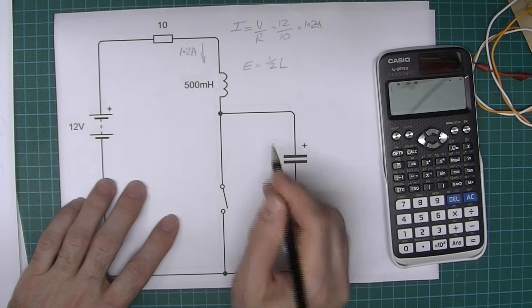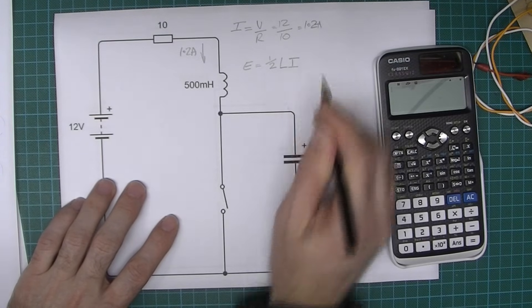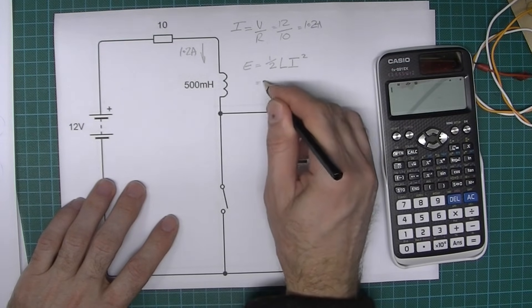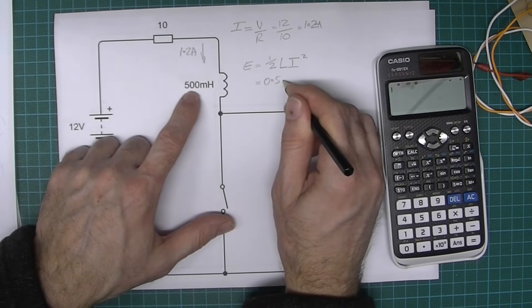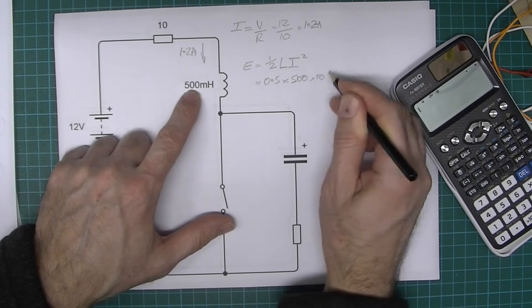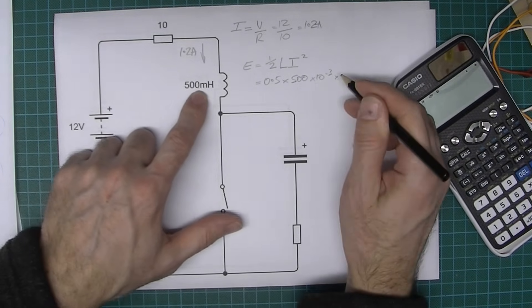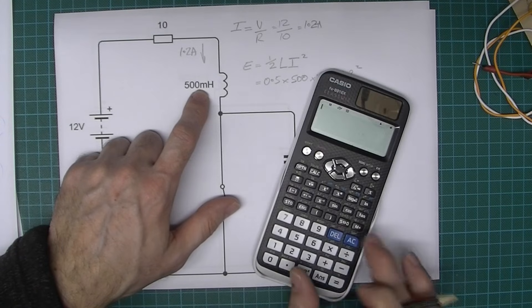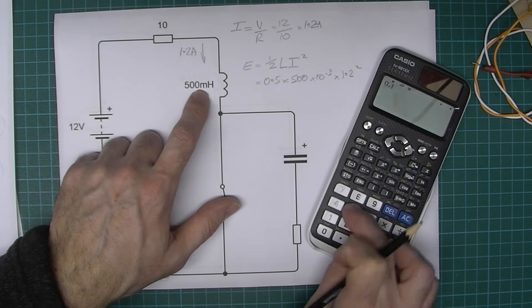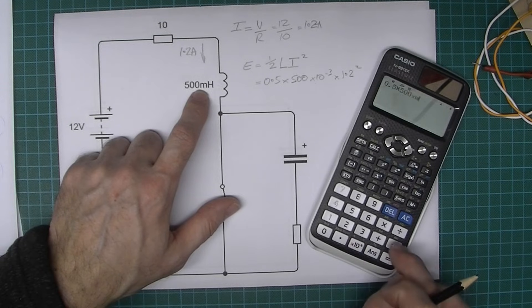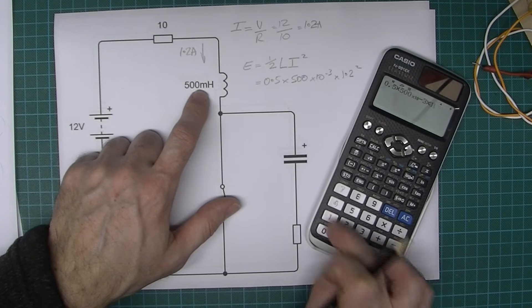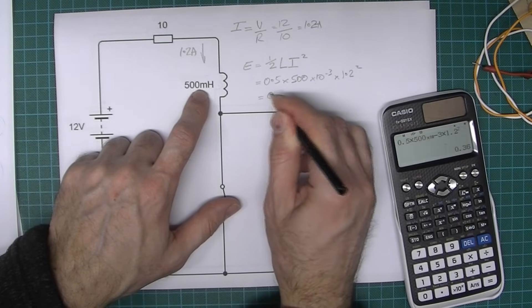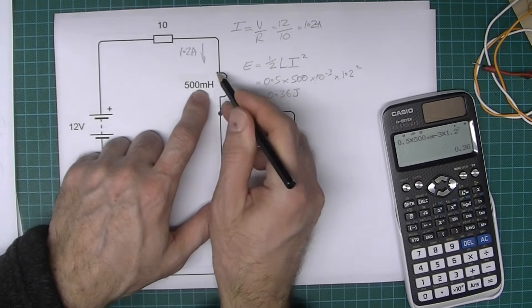So let's do that: 0.5 times inductance, so 500 times 10 to the minus three, times the current which is 1.2 amps squared. 0.5 times 500 times 10 to the minus three times 1.2 squared gives us 0.36 joules. So that's the energy stored in this coil.